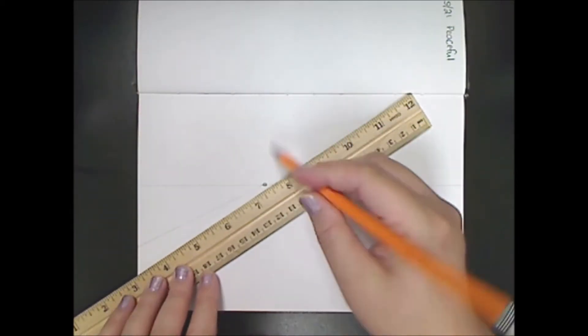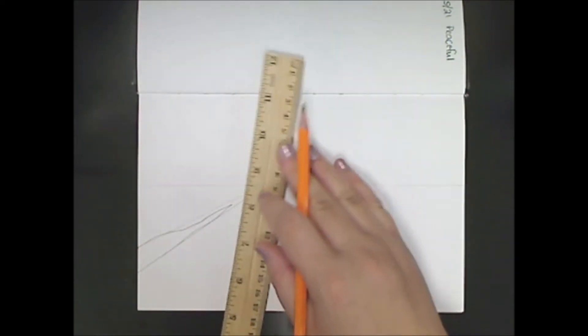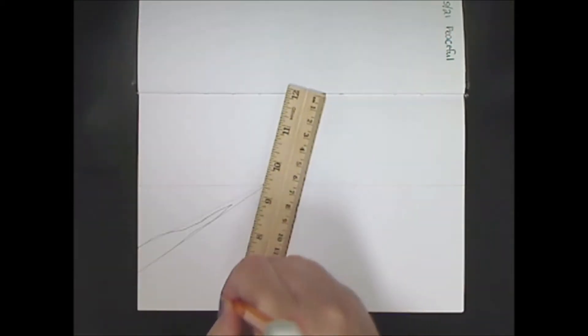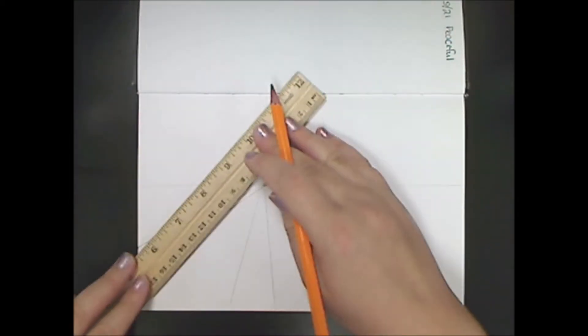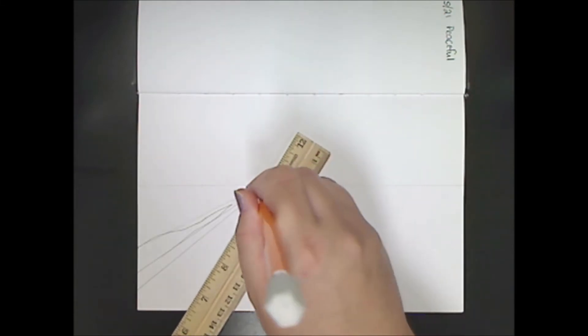Next, we're going to start with some orthogonal lines. Remember, orthogonal lines are key to drawing perspective along with the vanishing point. This is what's going to dictate or let us know how thick our tree trunks are.